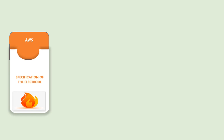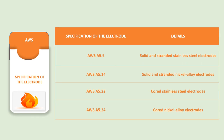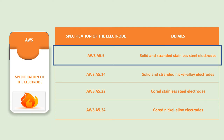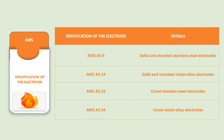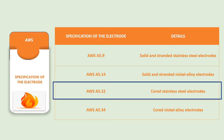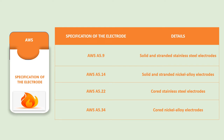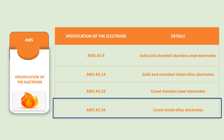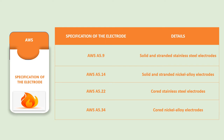The AWS specifications for electrodes for stainless steel and nickel alloys are helpful references. AWS 5.9 covers solid and stranded stainless steel electrodes. AWS 5.14 covers solid and stranded nickel alloy electrodes. AWS 5.22 covers cored stainless steel electrodes, and AWS 5.34 covers cored nickel alloy electrodes.